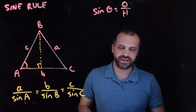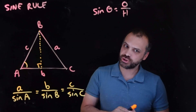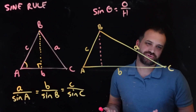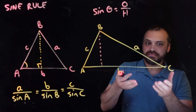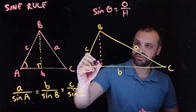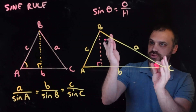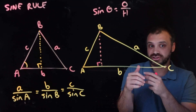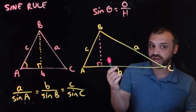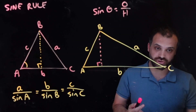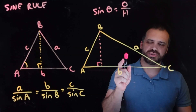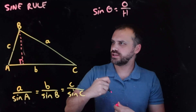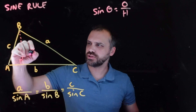We're going to construct a perpendicular line right down the middle of our triangle — you can see the little right angle there. The triangle I've drawn looks equilateral, but that's just how I drew it. It doesn't matter what kind of triangle it is — the proof works for all triangles, regardless of shape. I'll label this perpendicular height as length x.